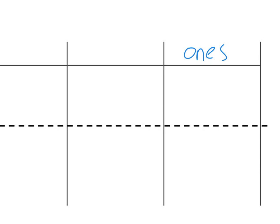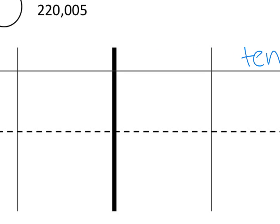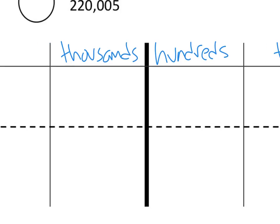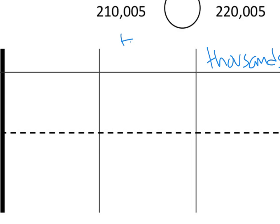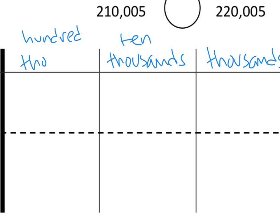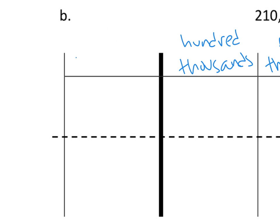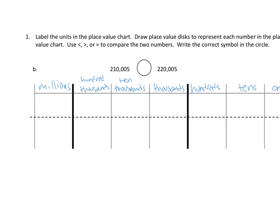I'm going to expand this out so I can draw: ones here, tens here. Let's keep going — next would be hundreds here, then thousands here. What's after thousands? Ten thousands, so I'm going to put ten thousands. Then hundred thousands. We're still not done, because over here is going to be one more, and that's millions. All right, shrink that back down, and we'll have our regular size problem again.